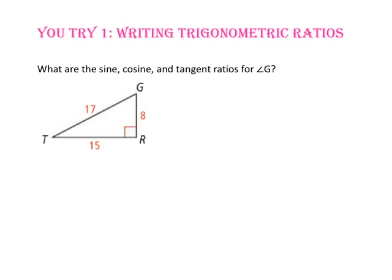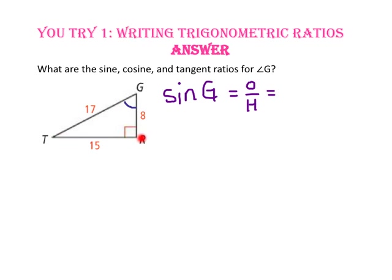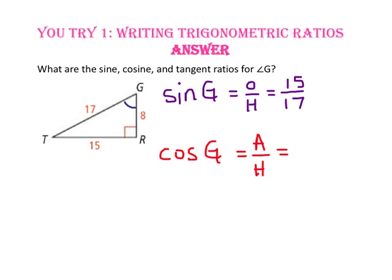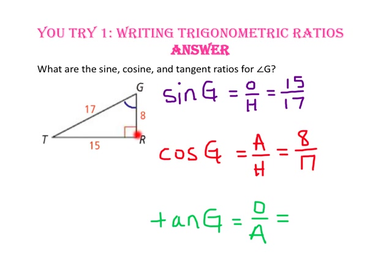Pause the video and do U-try number 1. What are the sine, cosine, and tangent ratios for angle G? Let's start by marking angle G. Since sine is opposite over hypotenuse, sine of angle G equals the length of the side opposite angle G, which is 15, over the hypotenuse, which is 17. Since cosine is adjacent over hypotenuse, cosine of angle G equals the side adjacent to angle G, which is 8, over the hypotenuse, which is 17. And since tangent equals opposite over adjacent, tangent of angle G equals 15 over 8.